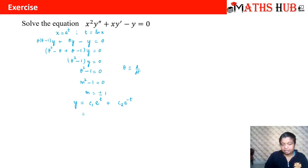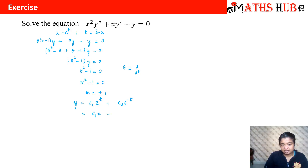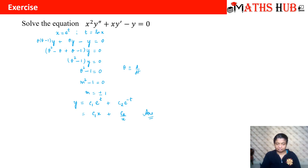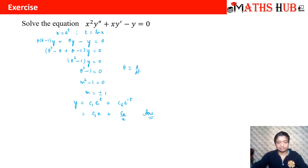Since the original question is in x, not t, we back-substitute e^t = x. So c₁e^t + c₂e^(−t) becomes c₁x + c₂/x. This is our final answer.